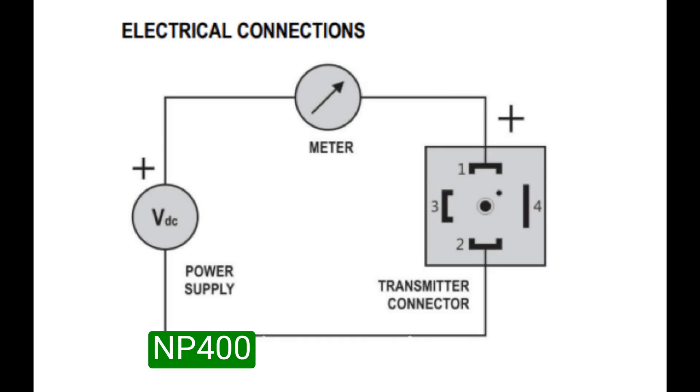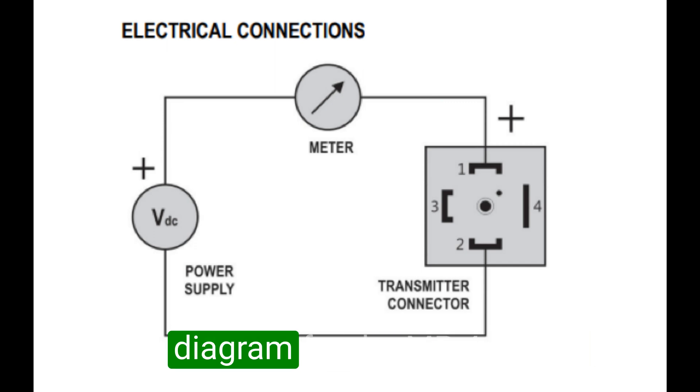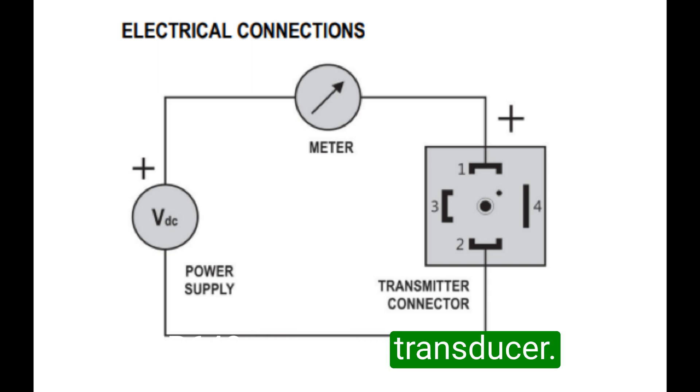The NP400 is a two-wire transducer, which means power and signal travel along the same two wires. Here's the wiring diagram for the NP400. It's also the same wiring for the NP640 pressure transducer.